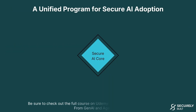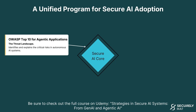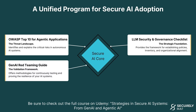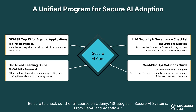OWASP provides a unified program for secure AI adoption with four key resources. First, the OWASP Top 10 for Agentic Applications — the threat landscape identifying critical risks in autonomous AI systems. Second, the LLM Security and Governance Checklist — the strategic foundation for policies, inventory, and organizational alignment. Third, the Gen AI Red Teaming Guide — methodologies for continuously testing AI system resilience. Fourth, the Gen AI SecOps Solution Guide — detailing how to embed security controls at every stage of development and operation. Together, these provide a comprehensive program for securing your AI initiatives.